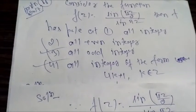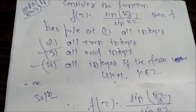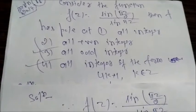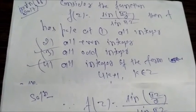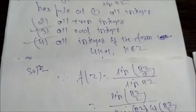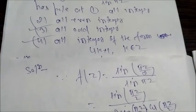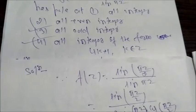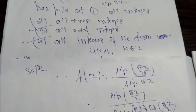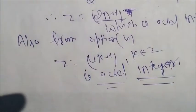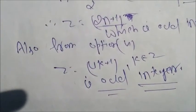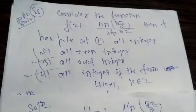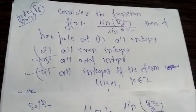If we move further and check option number 4, where it is written all integers of the form 4k+1 where k belongs to Z, if we put k equals 1 then we get 5, and if we put k equals 2 we get 9, which is an odd integer. So we can say option 4 is also correct. This question has two options, option 3 and 4, which are both correct.